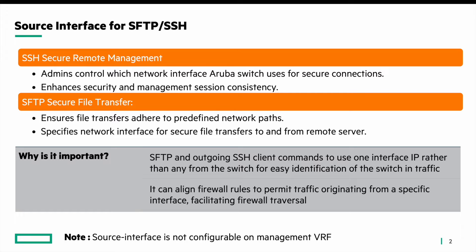Let's move on to why this is important. The first thing to consider is firewalls and traversing a firewall. Firewalls often have specific rules and policies that dictate which traffic is allowed or denied based on source and destination addresses. By specifying a source interface for SSH and SFTP, administrators can ensure that these protocols originate from a designated and authorized location, which aligns with the firewall policies.